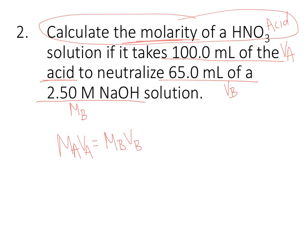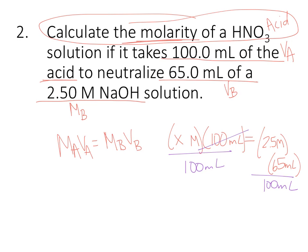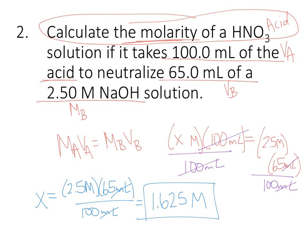We're looking for the molarity of the acid, so my MA is my X molar, VA is 100 milliliters, equals MB, that's 2.5 M times VB, 65 milliliters. Then solving for X, I'm going to divide both sides by 100 milliliters, so that this will cancel on the right, and the milliliters will cancel on the left, so that we end up with X is equal to 2.5 M times 65 milliliters divided by 100 milliliters is equal to 1.625 molar. And that's it, that's number 2.